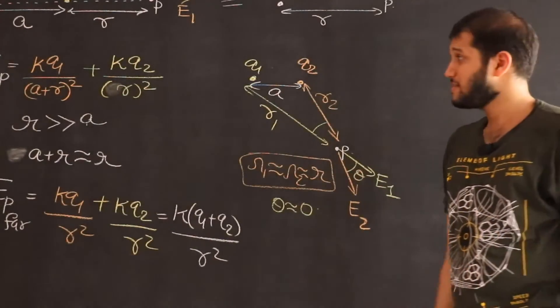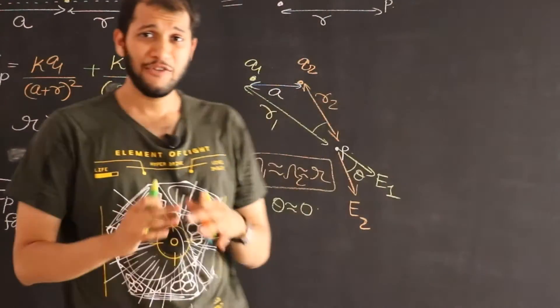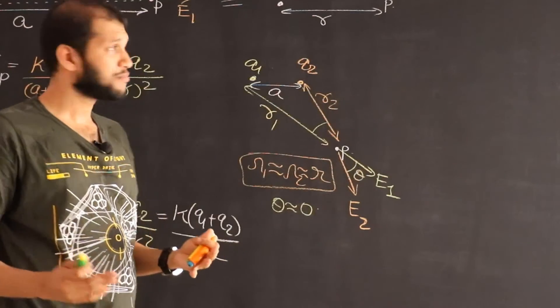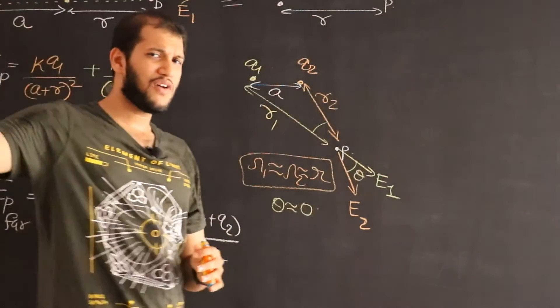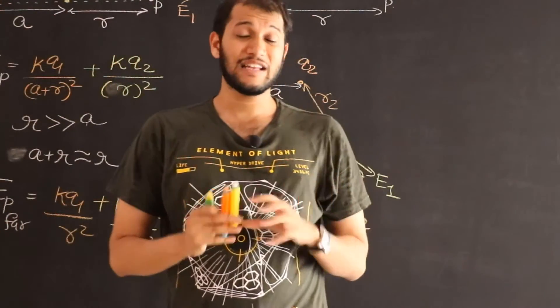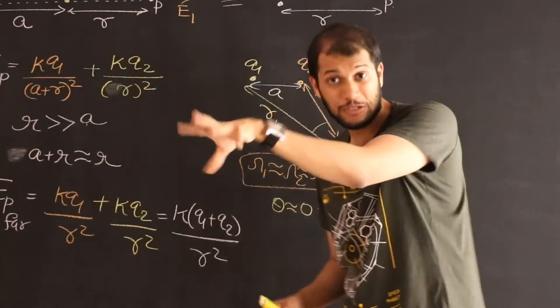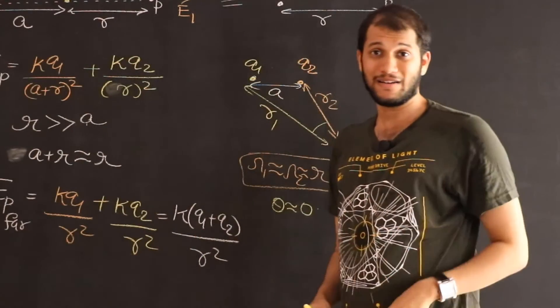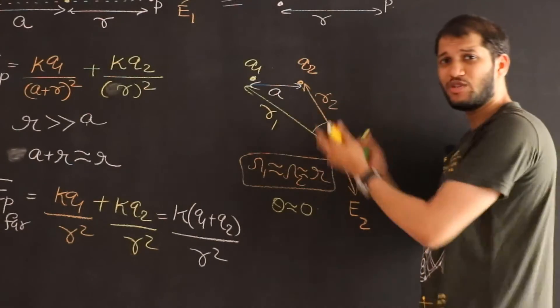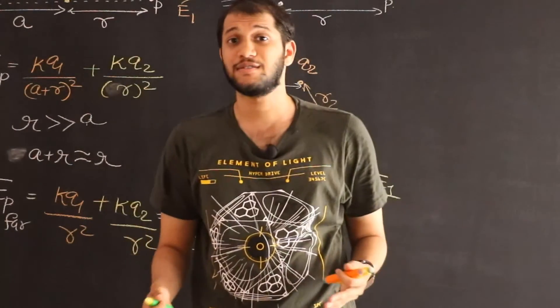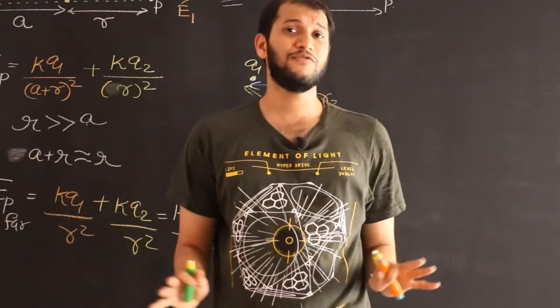So let's generalize this. In general if we have a couple of charges Q1 and Q2 and you go far away the electric field can just be K summation of Q divided by R². And now there's nothing special about two charges. We can have three charges or four charges or n number of charges.